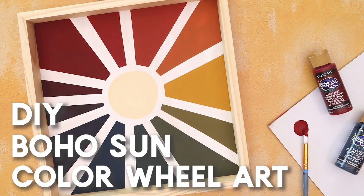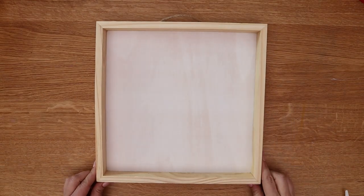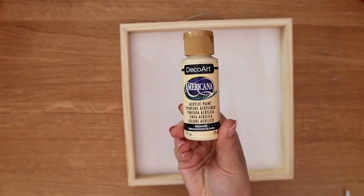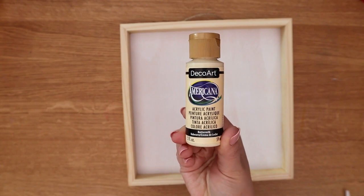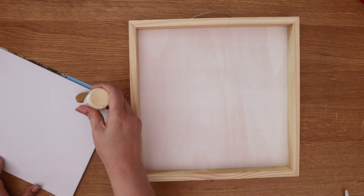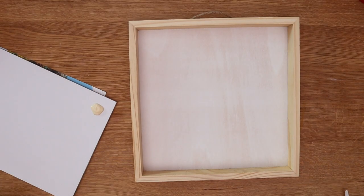Let's paint our own Ojo Sun color wheel art. I'm starting off with a blank 12 inch by 12 inch square whitewashed wooden sign that I got from Michaels and then I have DecoArt Americana Acrylics in Buttermilk which is a beautiful creamy light yellow color.